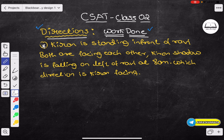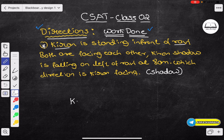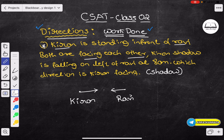The last type of problem is a shadow problem. Now I will take the left side and the right side. Kieran is standing in front of Ravi. Kieran and Ravi are standing in front of one another facing each other. So the right side is facing each other. Kieran is sitting in front of one another, Kieran is taking the left side, Ravi is taking the left side, you are taking the right side.